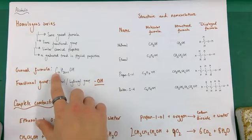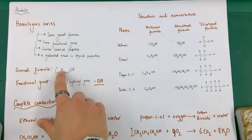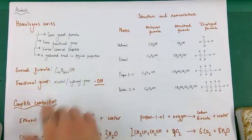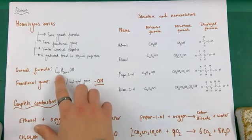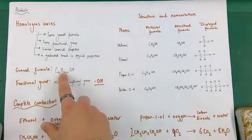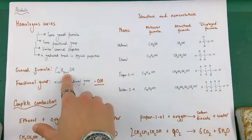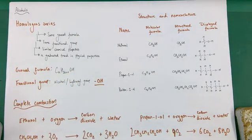The general formula for all the alcohols is as follows: CₙH₂ₙ₊₁OH. For whatever the number N is for carbons, it will be 2 times that number plus 1 hydrogens, and then OH at the end. The functional group present here is the alcohol or hydroxyl functional group, that's the OH group.